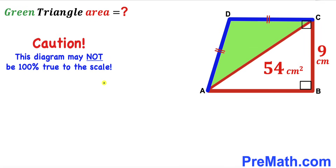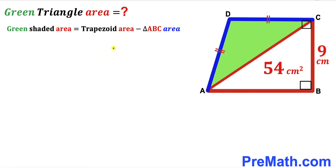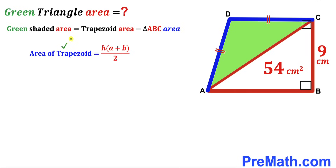Note that this figure may not be 100% true to scale. To find the area of the green shaded triangle ACD, we observe that it equals the whole trapezoid ABCD area minus the area of right triangle ABC. We already know triangle ABC area is 54 cm², so our task is to calculate the area of trapezoid ABCD.